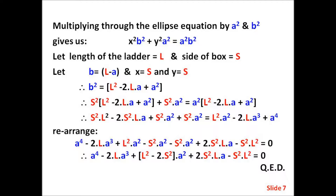After rearranging, this gives us the final polynomial: a⁴ minus 2·l·a³ plus (l² minus 2s²)·a² plus 2·s²·l·a minus s²·l² — QED.